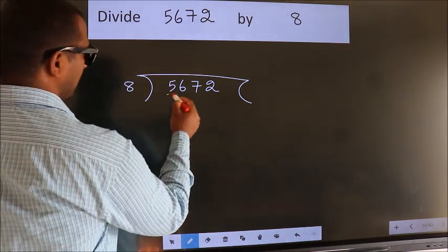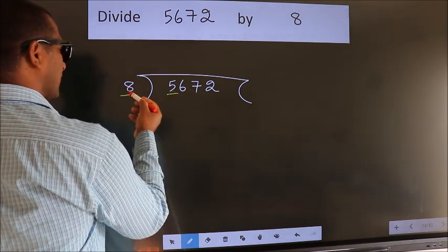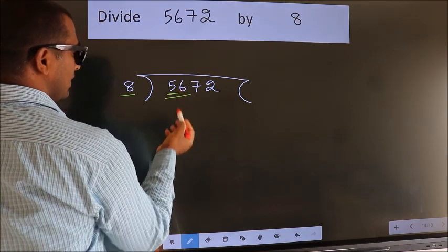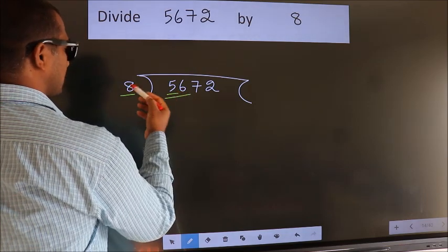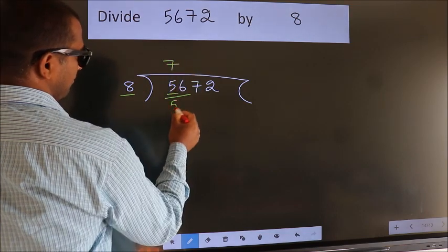Next, here we have 5. Here 8. 5 is smaller than 8, so we should take two numbers: 56. When do we get 56? In the 8 table. 8 times 7 is 56.